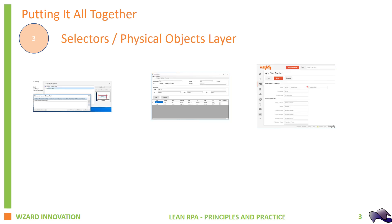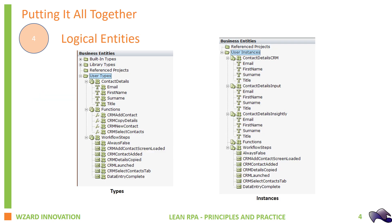We looked at the physical objects layer and how selectors can be used to identify all of the components, whether in Windows applications or browser-based applications. They provide as robust as possible a solution for automation, allowing the underlying applications to change.